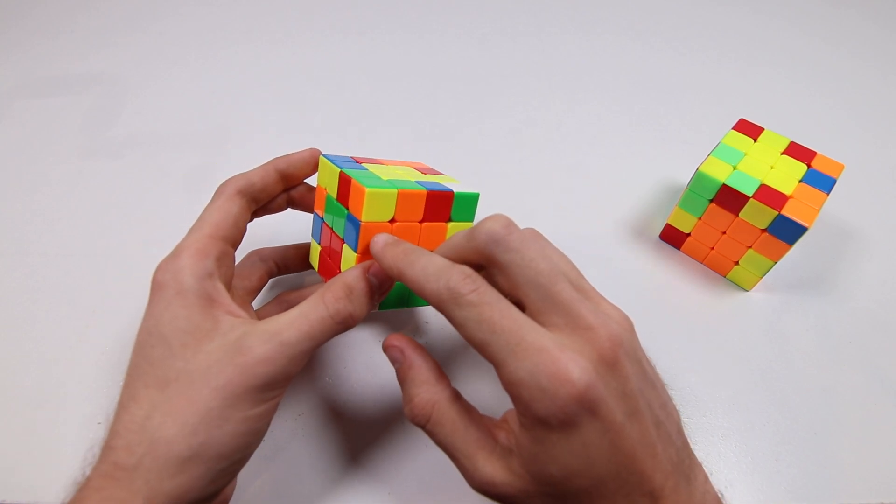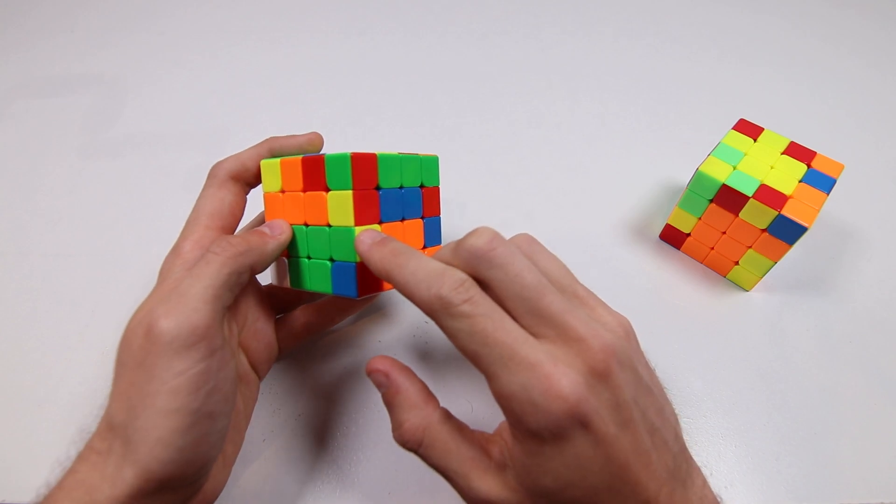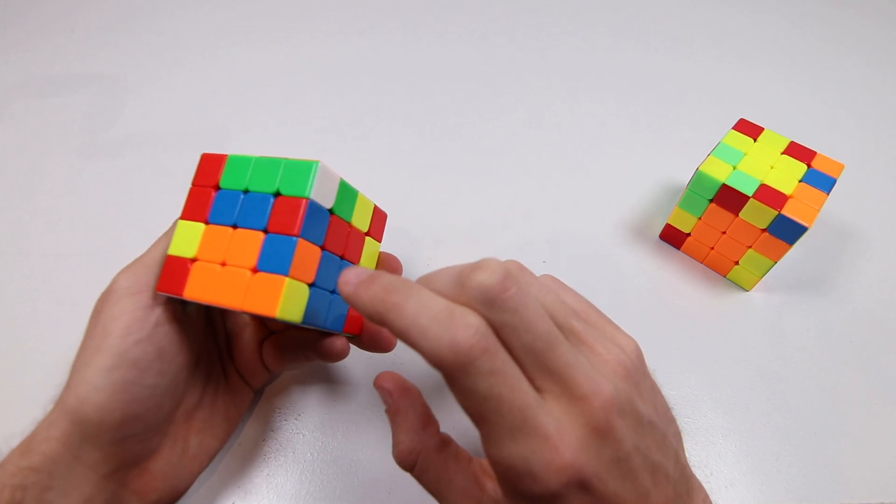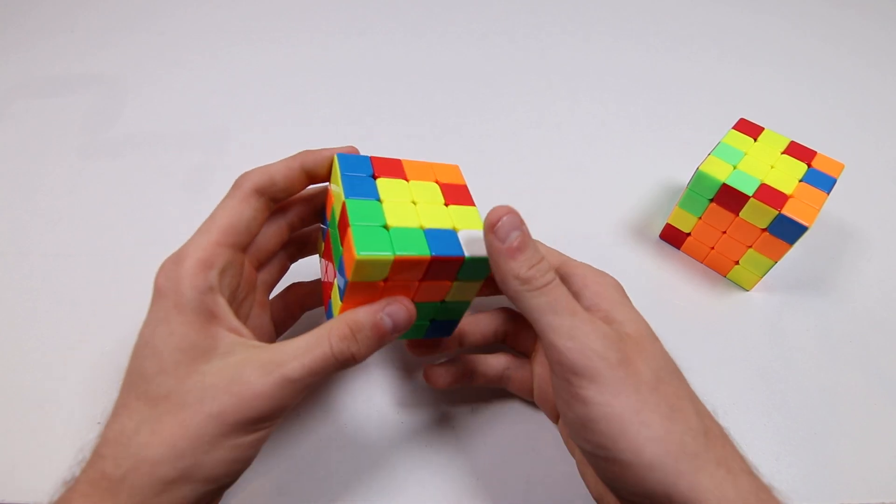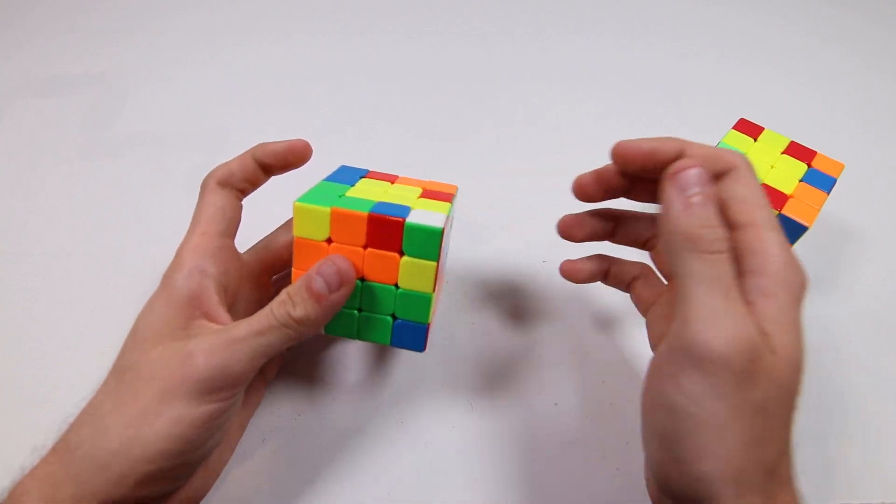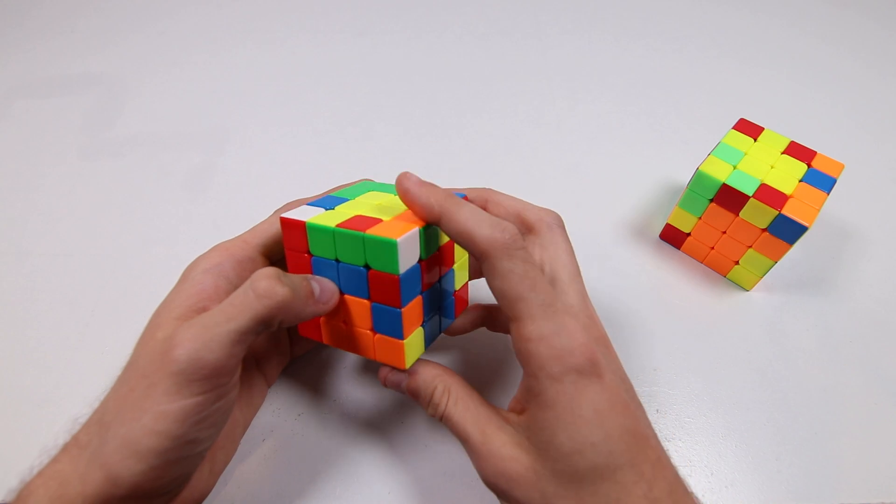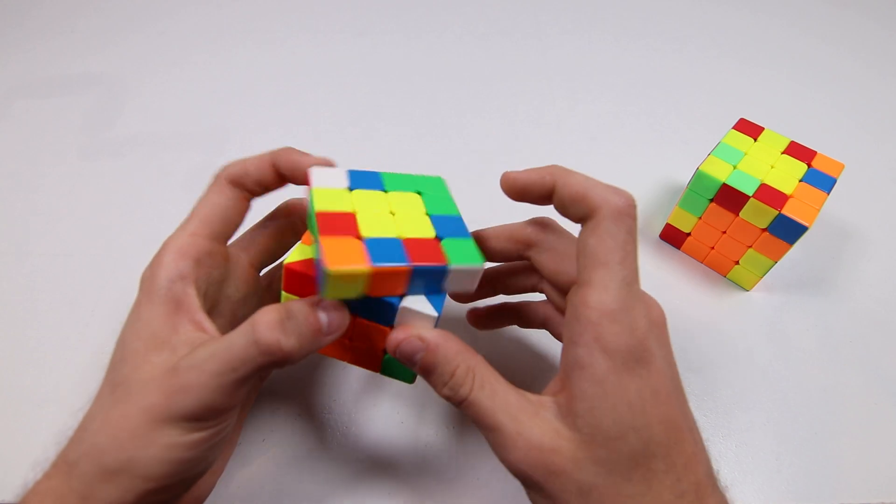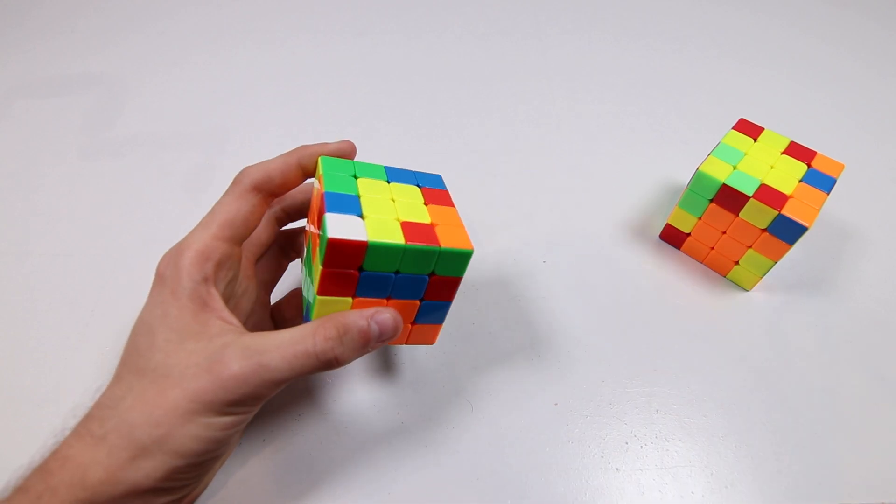So we want to bring the orange blue wing to here and it's over here. So the way 4x4 solvers might normally do this is like that and then rotate, or maybe this and then rotate, or maybe rotate and then that and then another rotation, there's all sorts of things you can do.